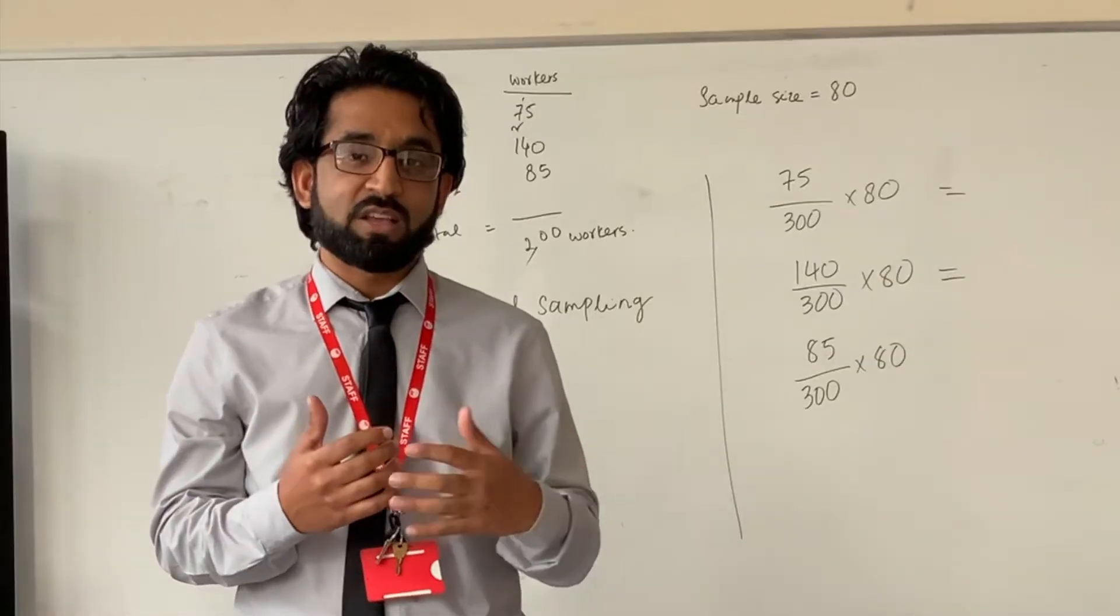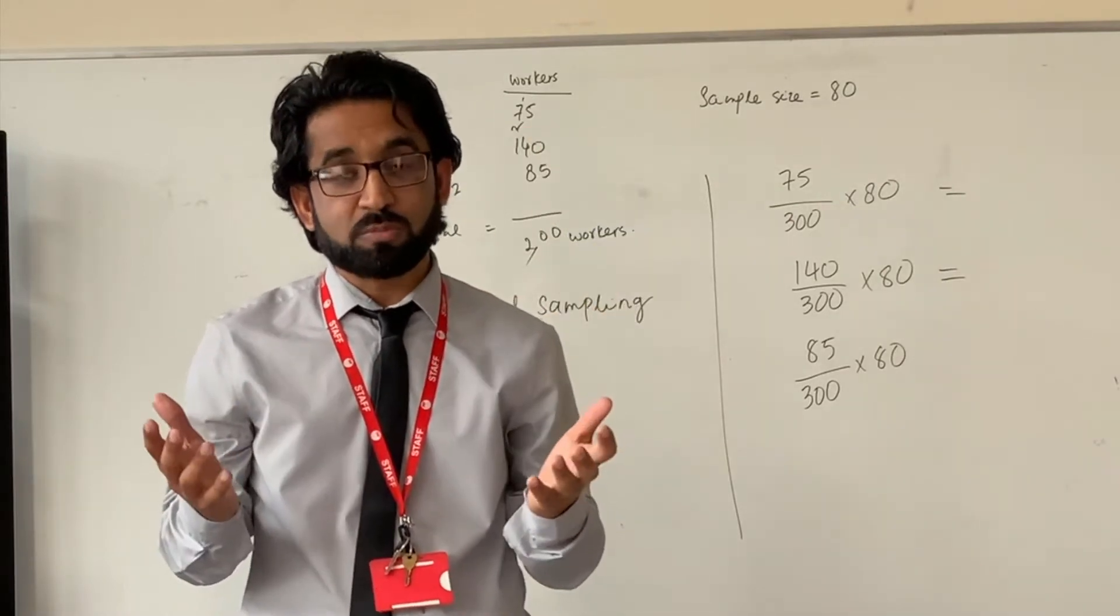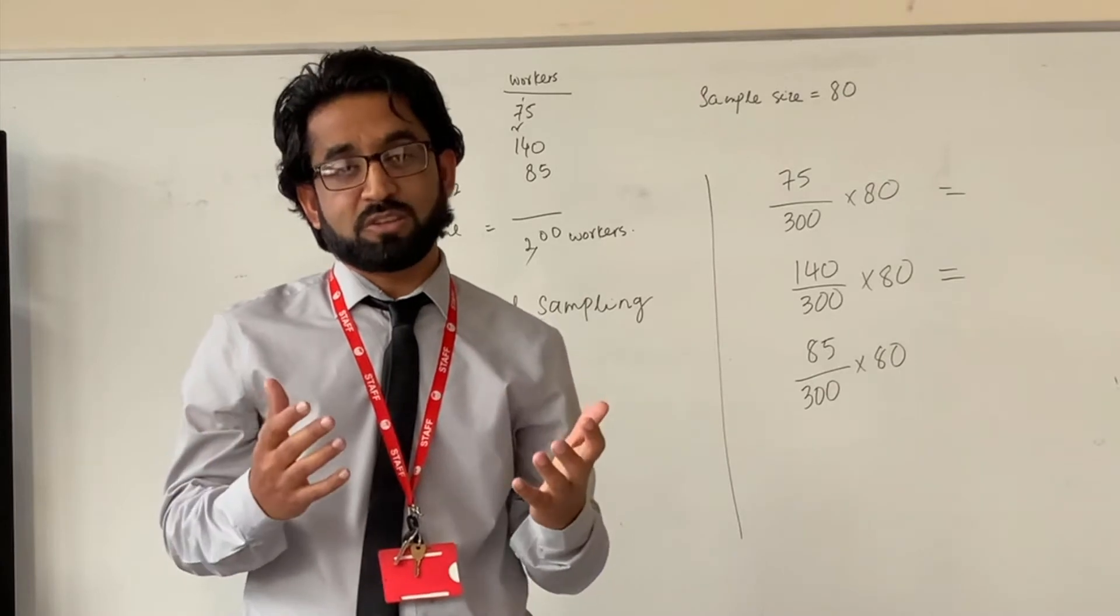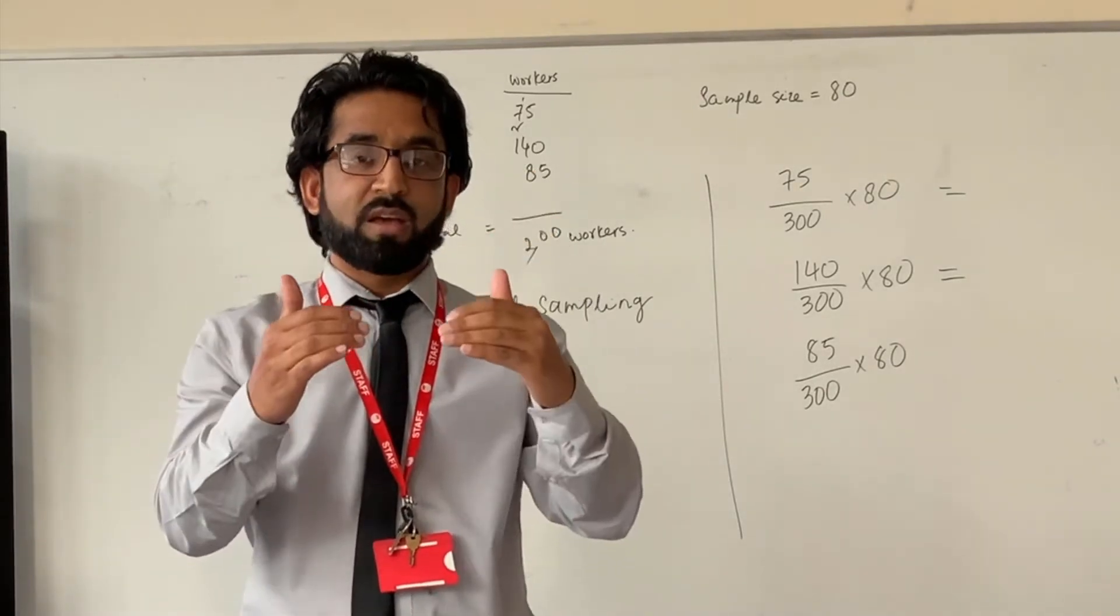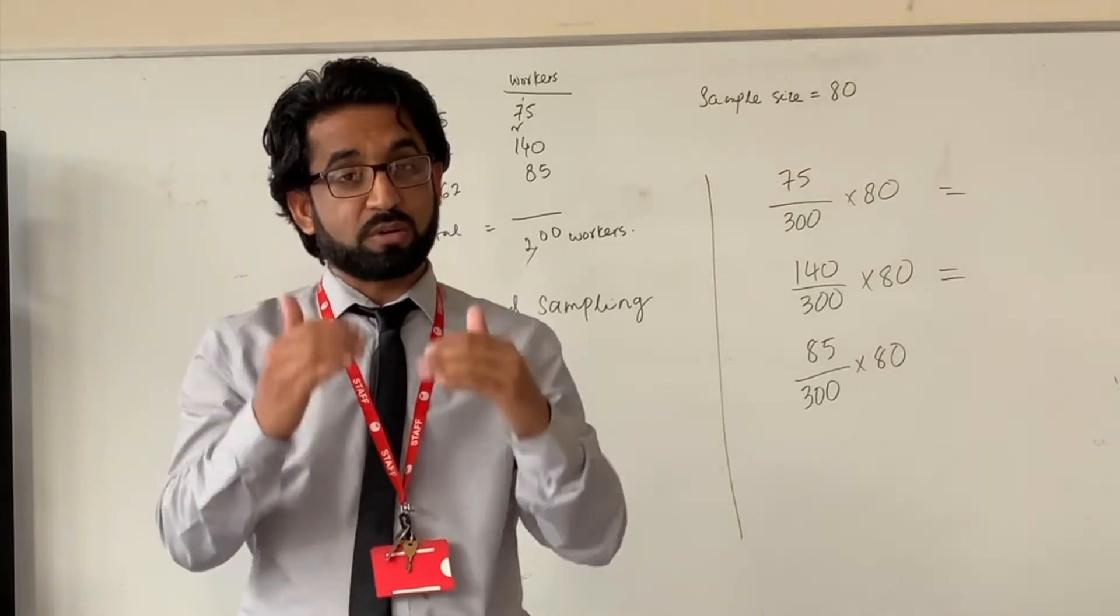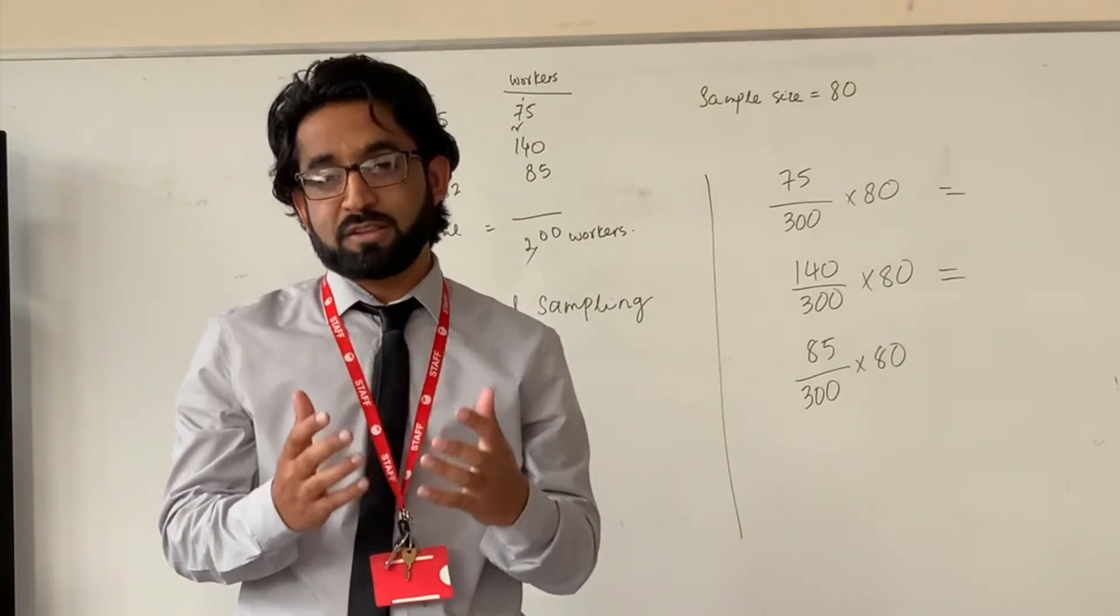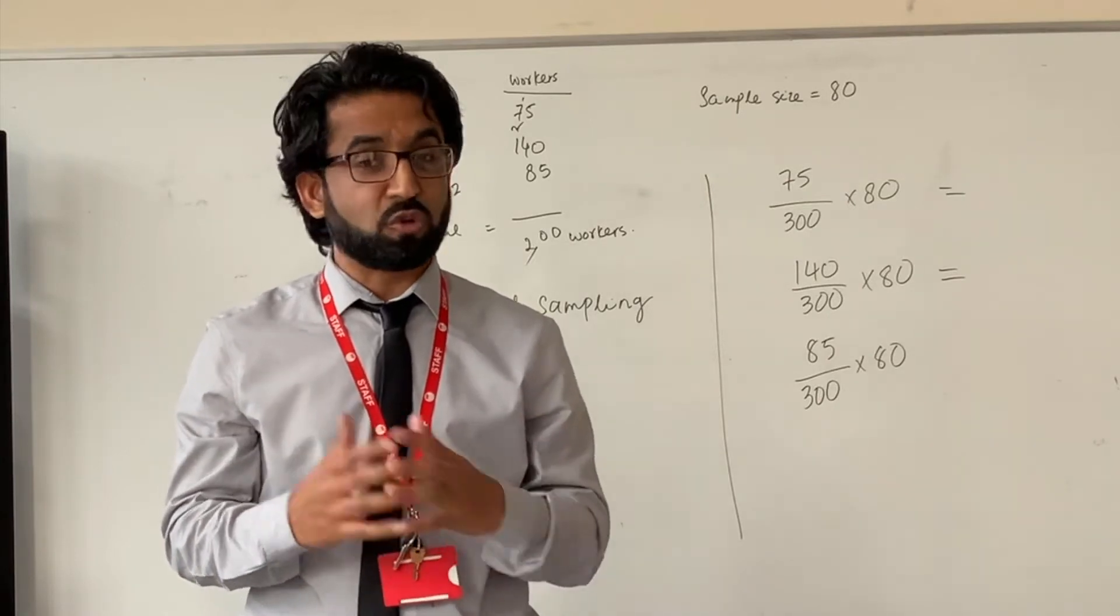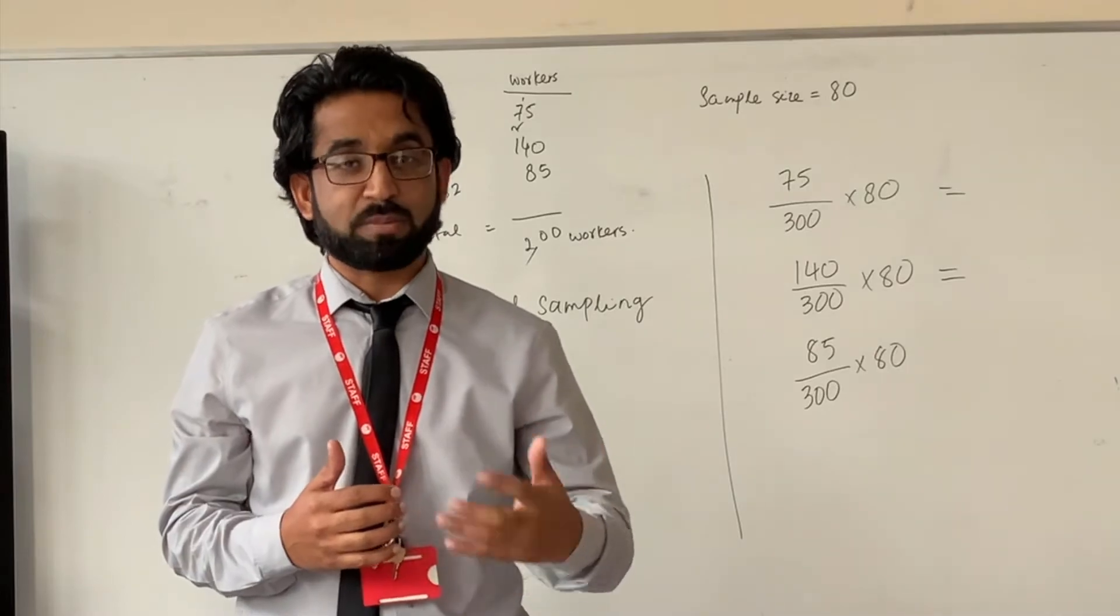Because maths is set, higher sets tend to be larger in group size. So for example, set one and set two will be 30, sometimes 32 students. But as we go down, the maths sets tend to go lower as well in size. For example, set four or five will be a maximum of 12 to 15 students, not more than that, because they will need more one-to-one support and help in lesson time.